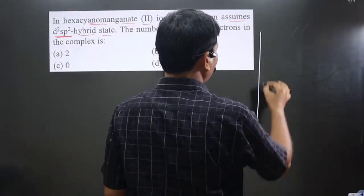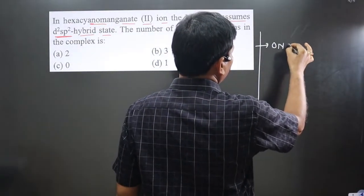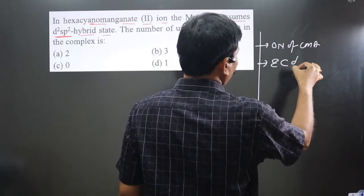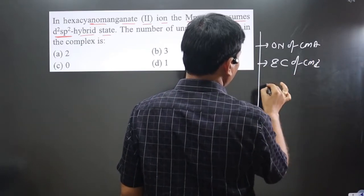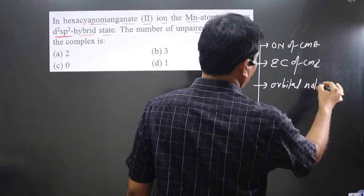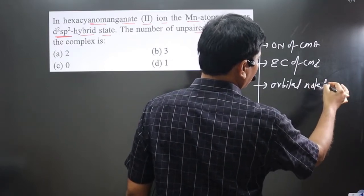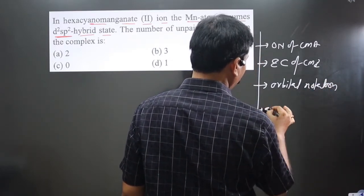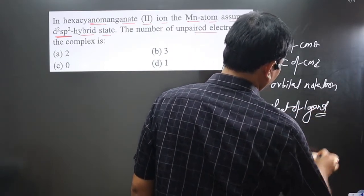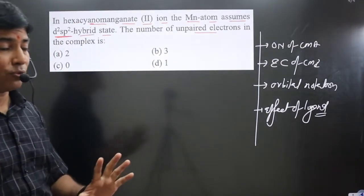To apply valence bond theory we follow these steps: First, write the oxidation number of the central metal atom. Next, write electronic configuration of the central metal ion. Next, write orbital notation. And then in the last, consider the effect of ligand—whether we have a strong field ligand or weak field ligand. Strong field means pairing of electrons, weak field means no pairing.